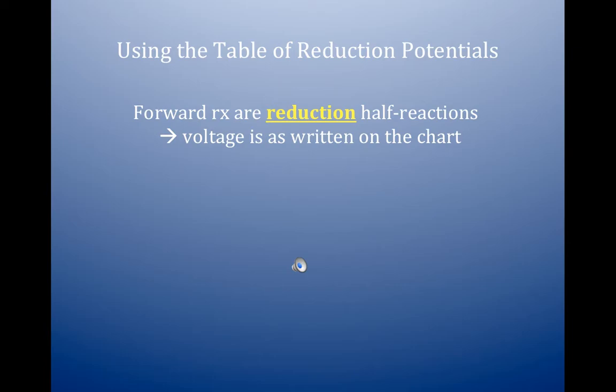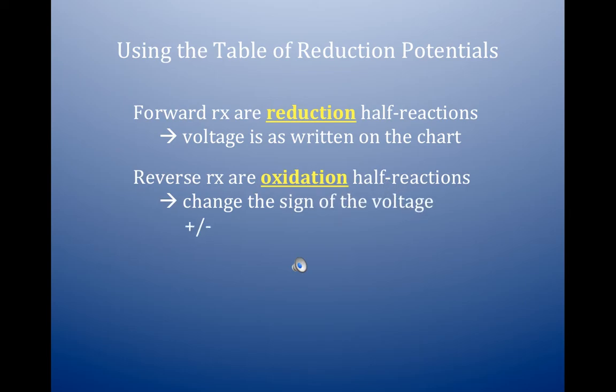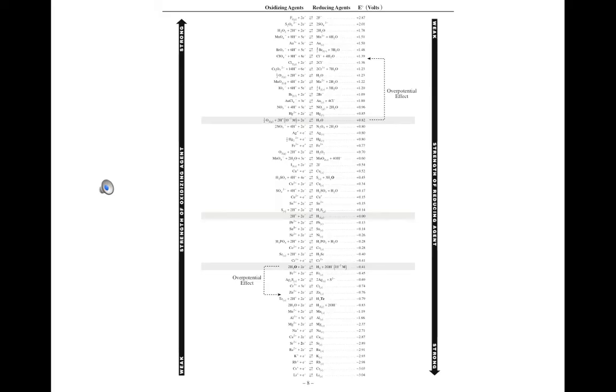Forward reactions are always reduction on this chart, and you just grab the voltage the way it's written. If you need an oxidation reaction from the chart, it's the reverse reaction, and you flip the sign. So, if it had a positive voltage, it becomes negative. If it becomes negative, it changes to positive. That's for oxidation. Reduction, you just take it the way it comes.